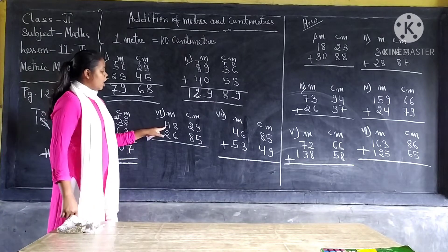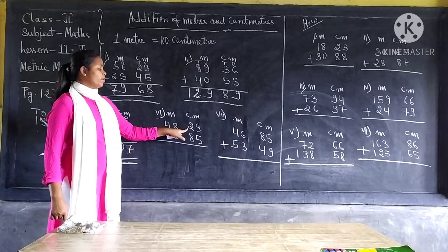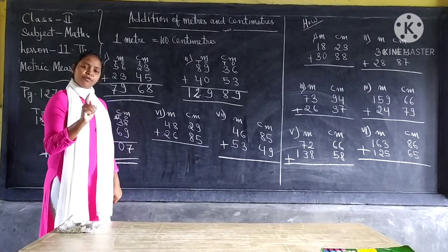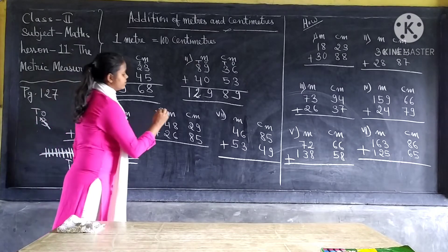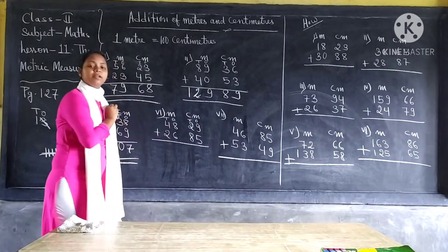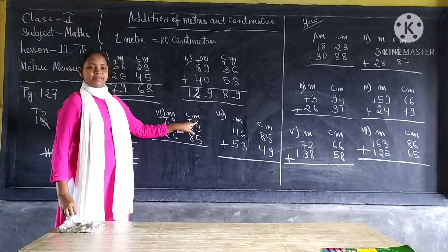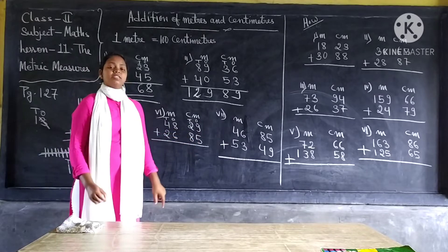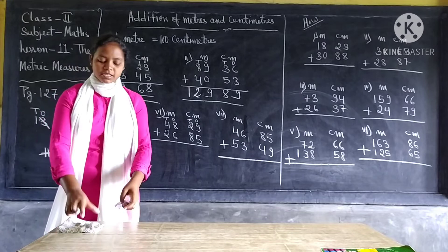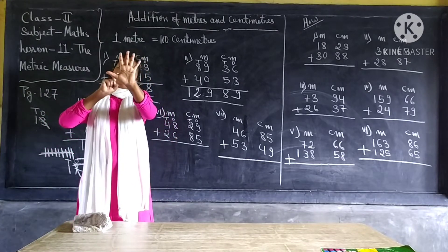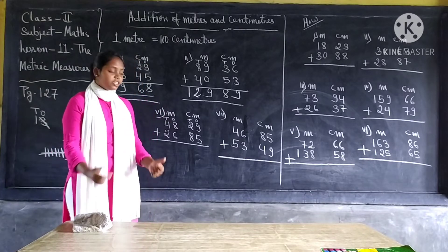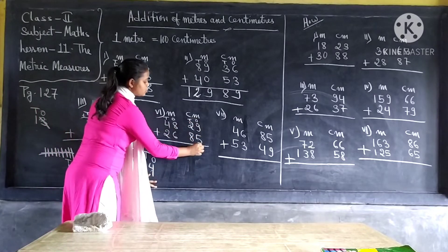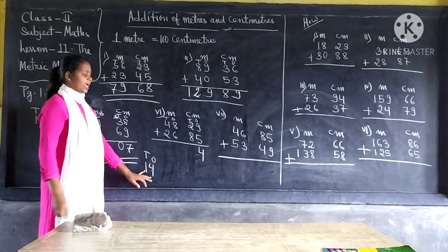Next we have the question: forty-eight meters and some centimeters. For your understanding, just put tens and ones here so that you will not make mistakes. Under the centimeter, we have tens and ones. Under ones, we have nine ones and five ones. Nine plus five equal to fourteen, but we cannot write fourteen just like that. So we write four under ones, and this one ten we will carry it and write it here above the tens.